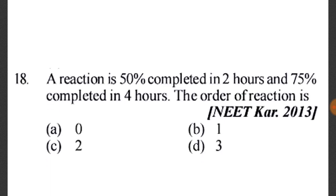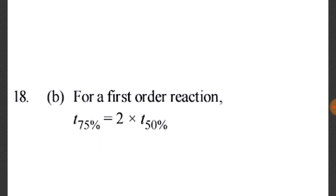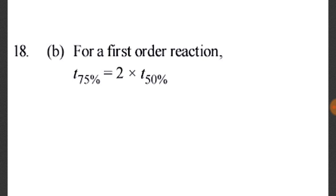Question 18: A reaction is 50% complete in 2 hours and 75% complete in 4 hours. Since T_75% = 2 × T_50%, this confirms it is a first order reaction, because every half-life reduces concentration by 50%.